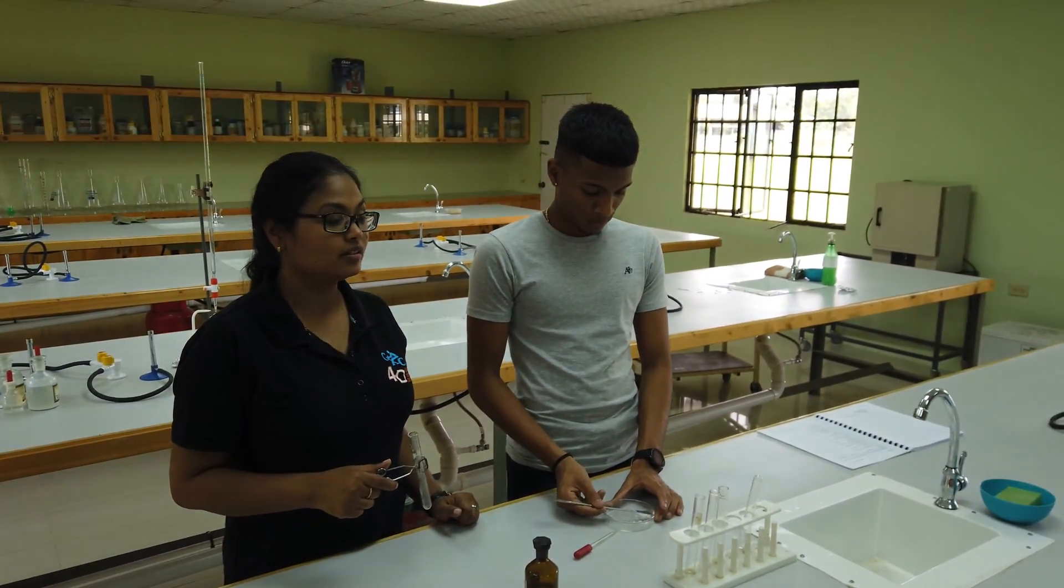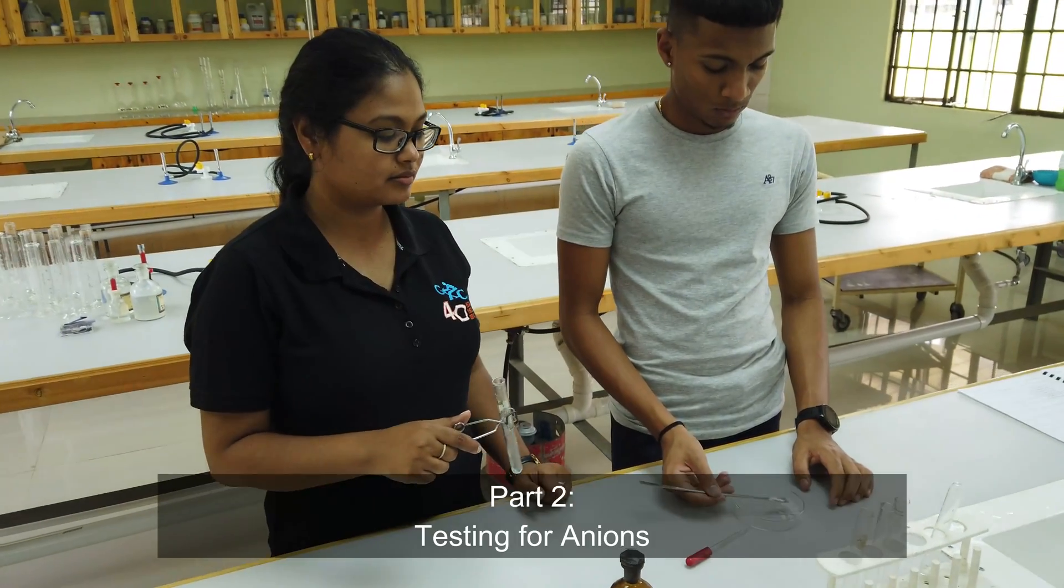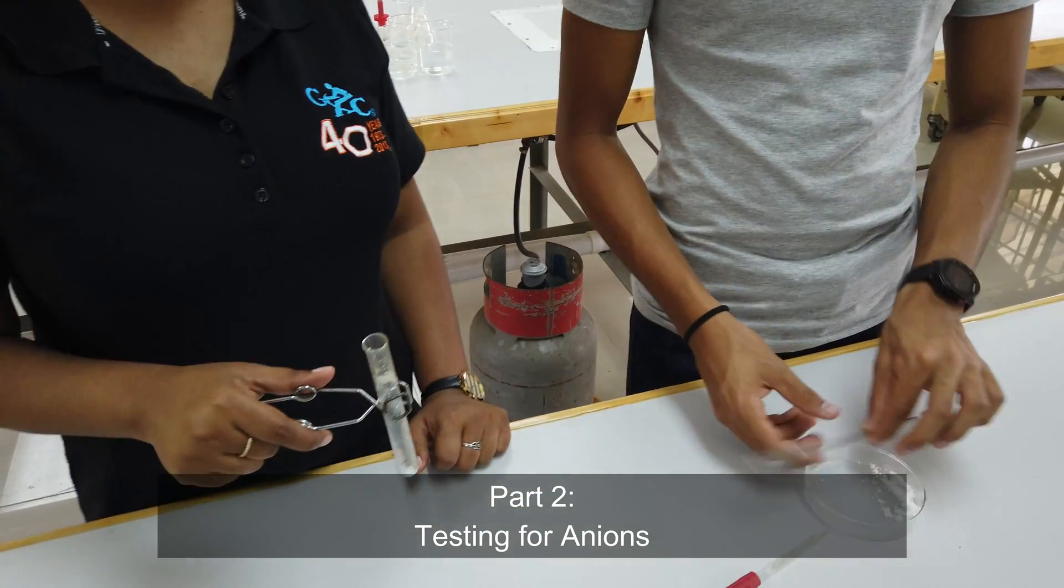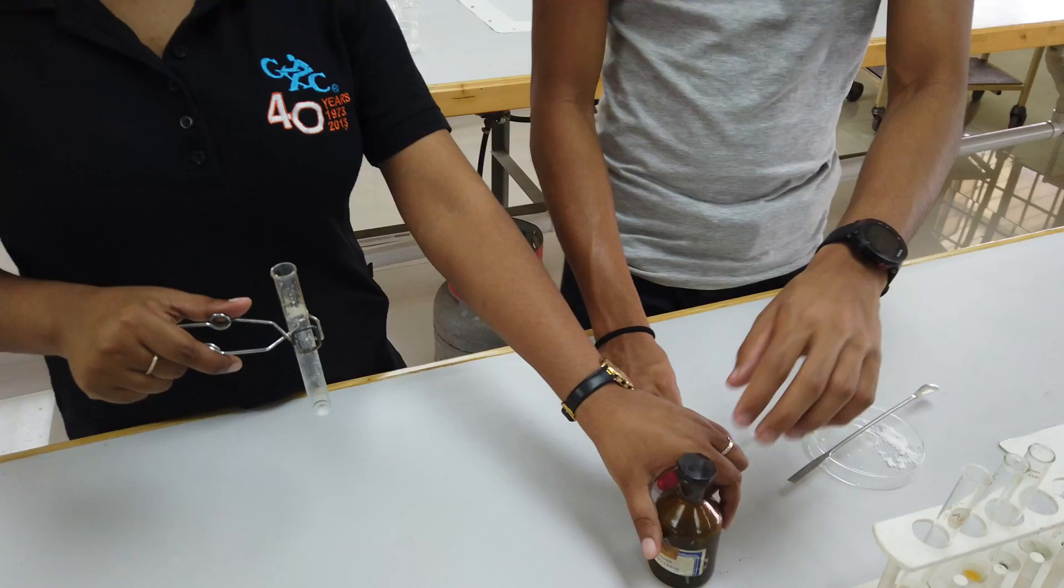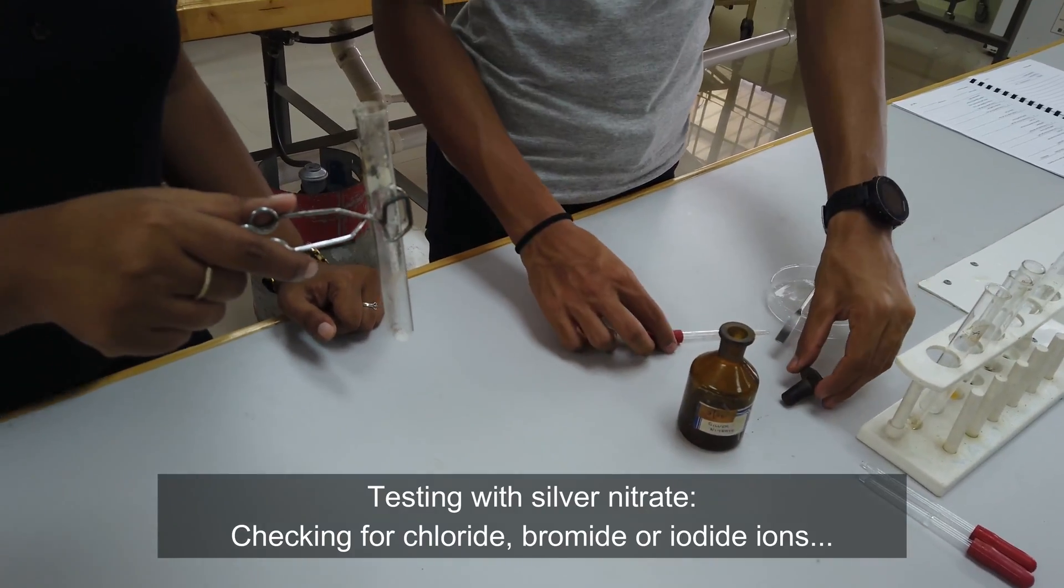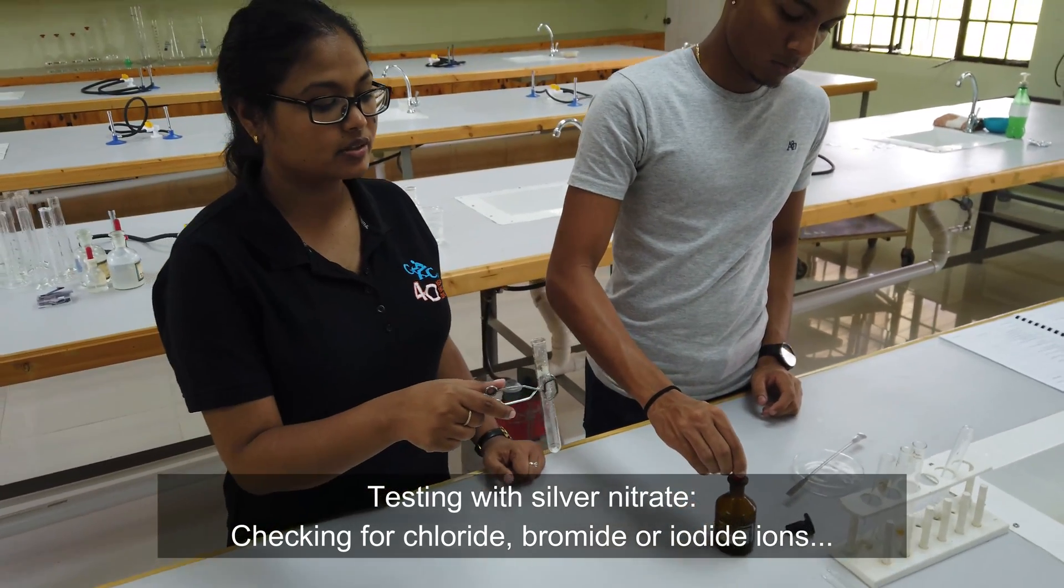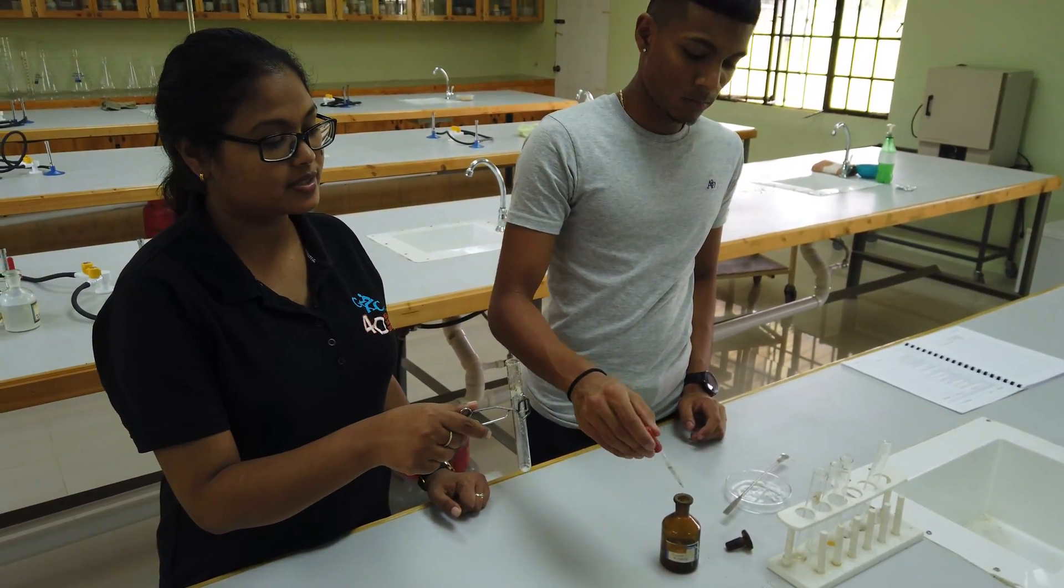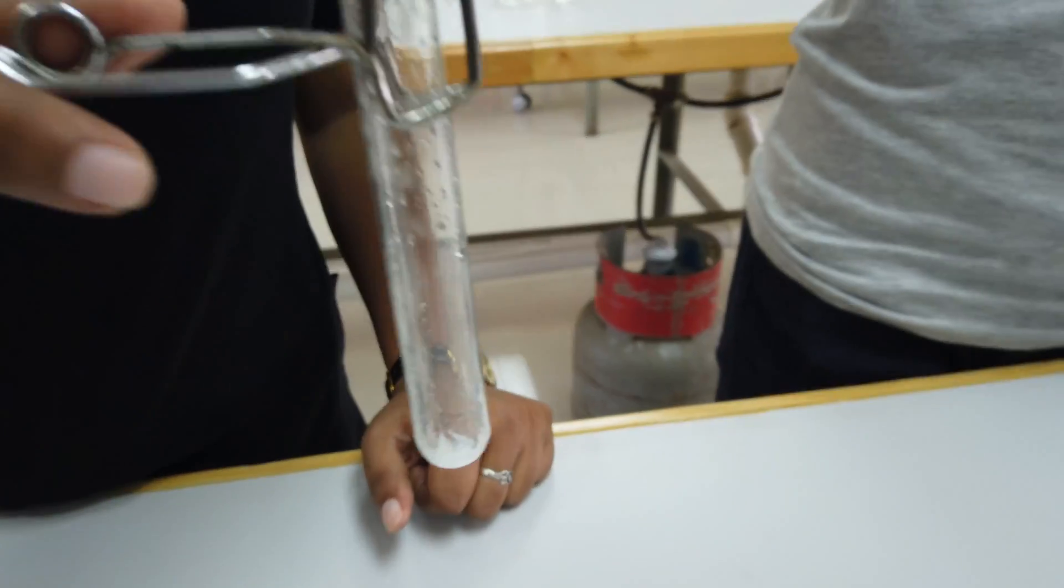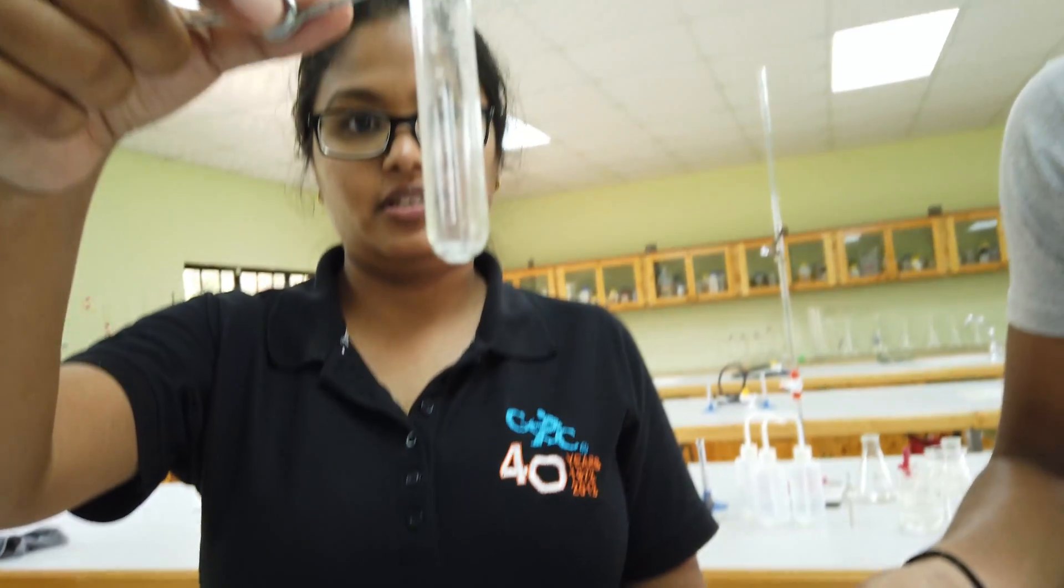Now that we know the cation is lead, we're just gonna go ahead and test the anion. Little bit of salt, and to this we're gonna add some silver nitrate. We're looking for a precipitate. If there's a precipitate, it means chloride, bromide, or iodide is present. If there's no precipitate, it means that none of these things are present.